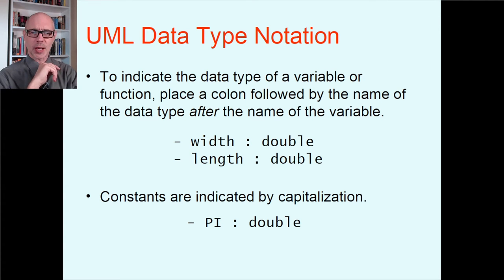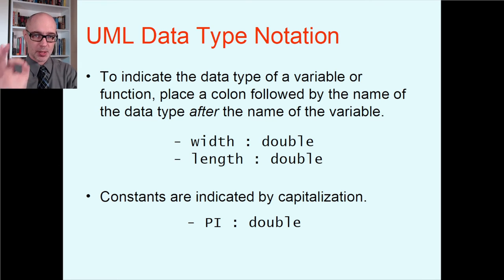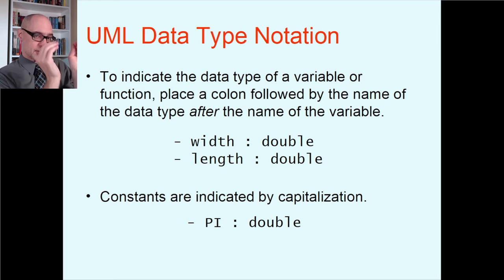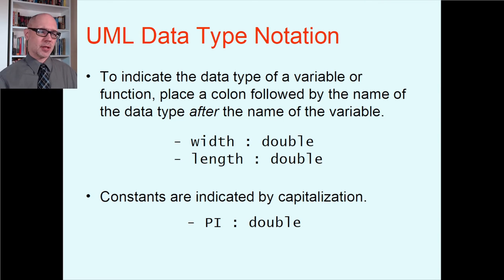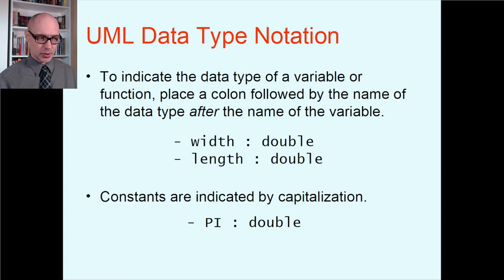This is actually not the first time we've seen this — if you look closely at the Dev C++ class tab, it also shows things this way: here's the name of your function or variable, and then the type after a colon. So Dev C++ is actually showing you your classes in UML format. The way UML lays that out very much matches the natural design thought process — you think of what things you need first, name them, and then decide the types later.